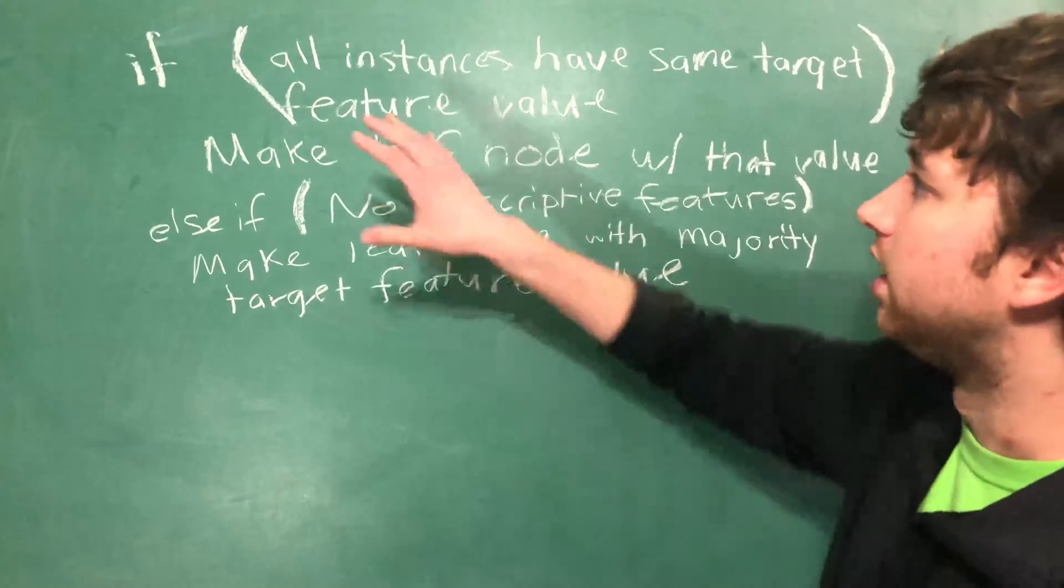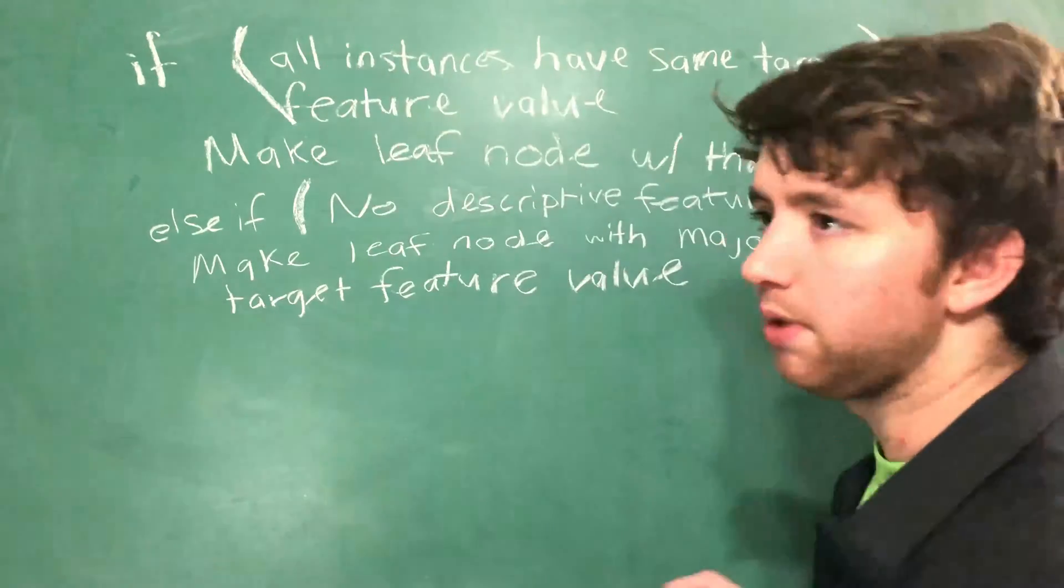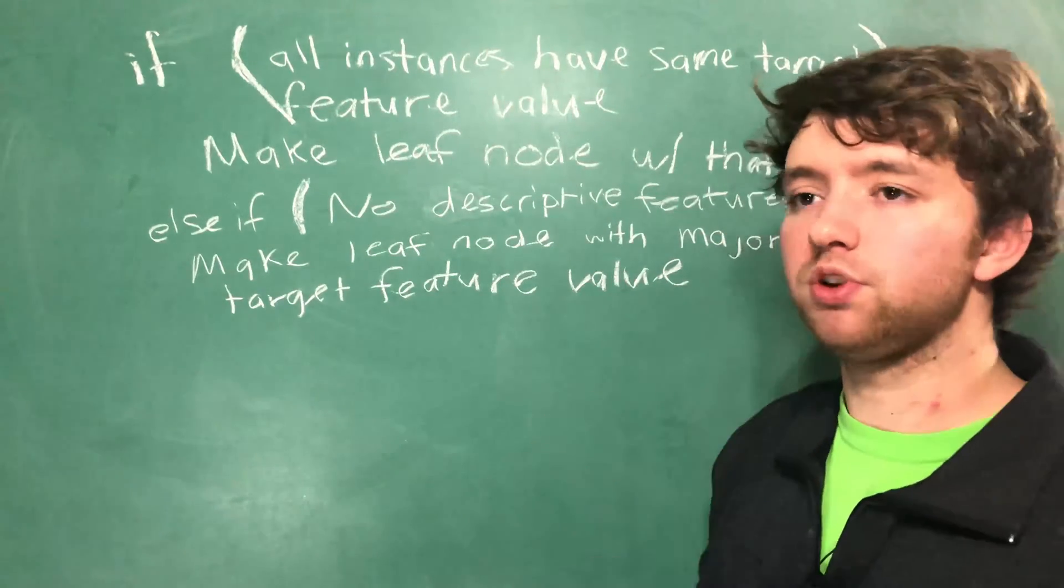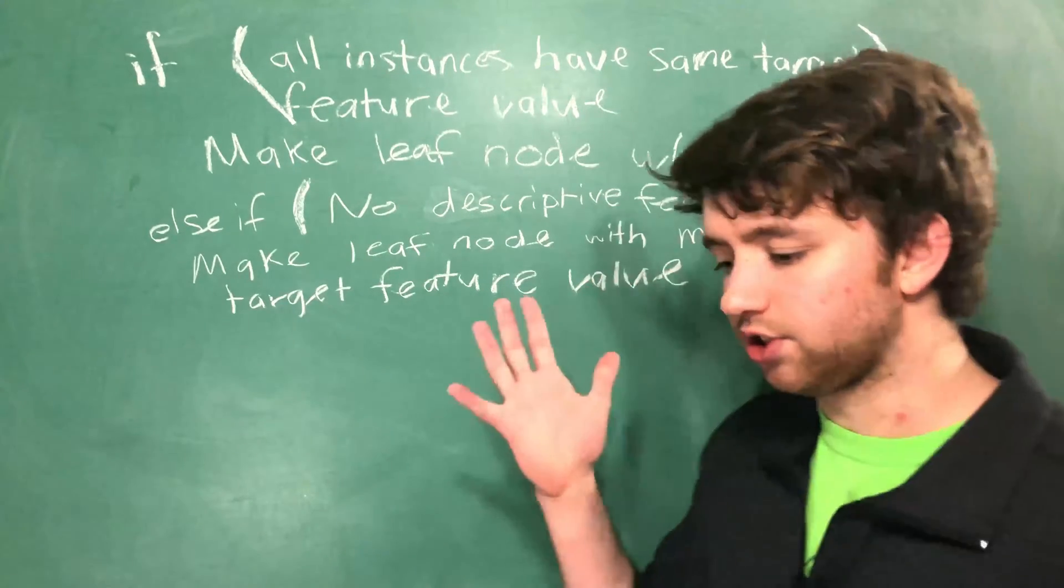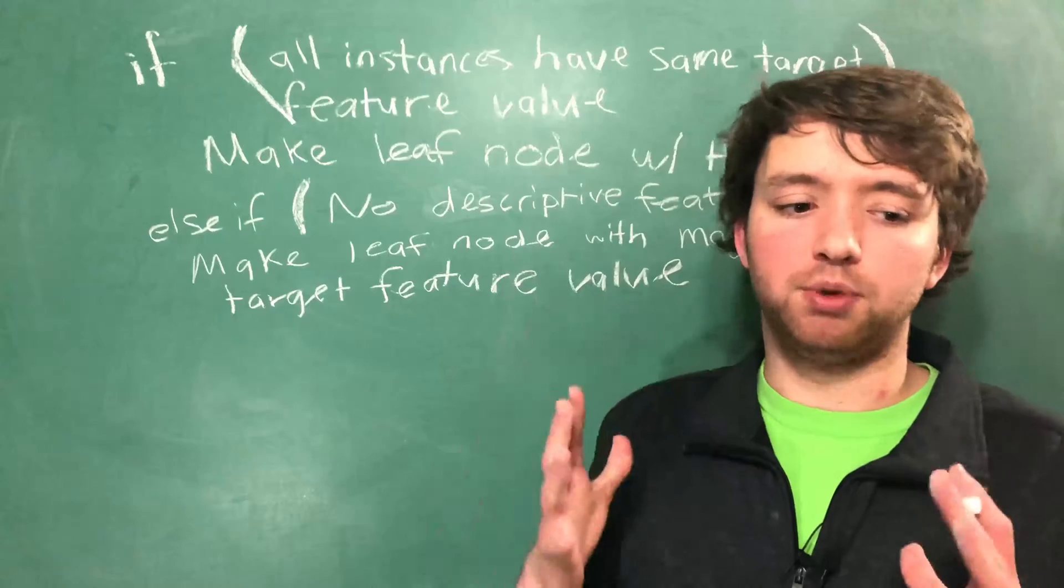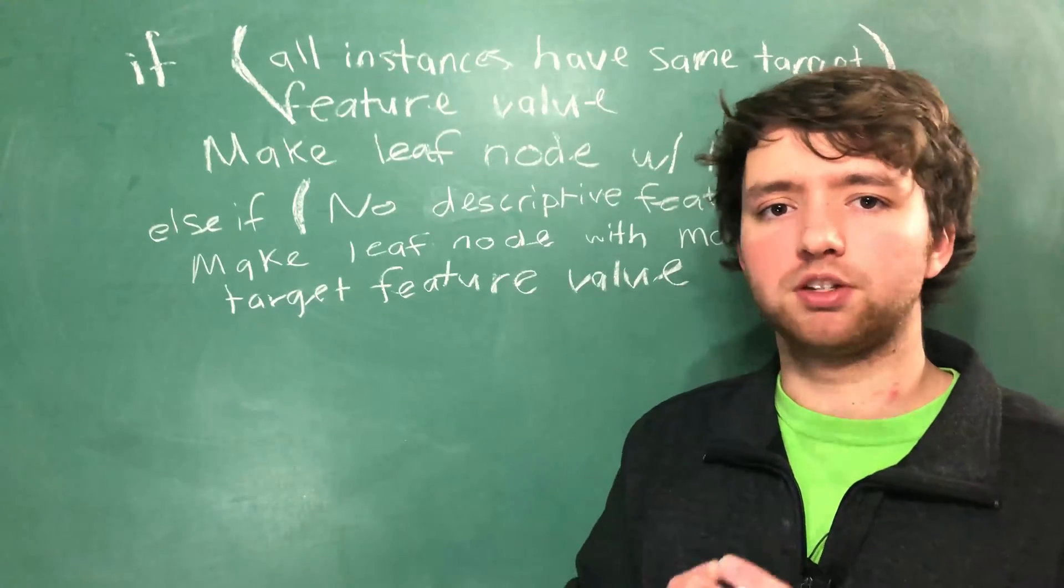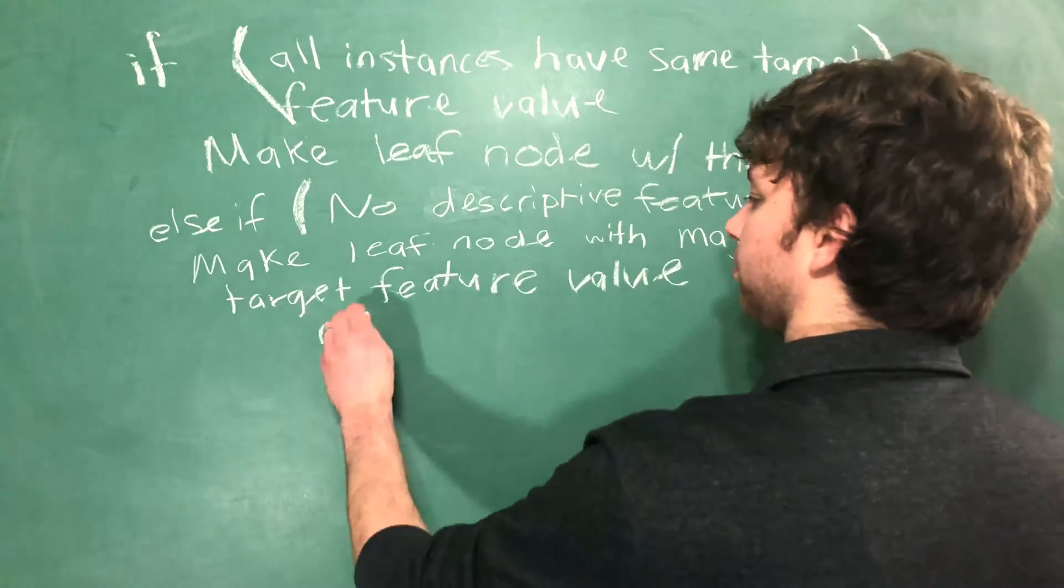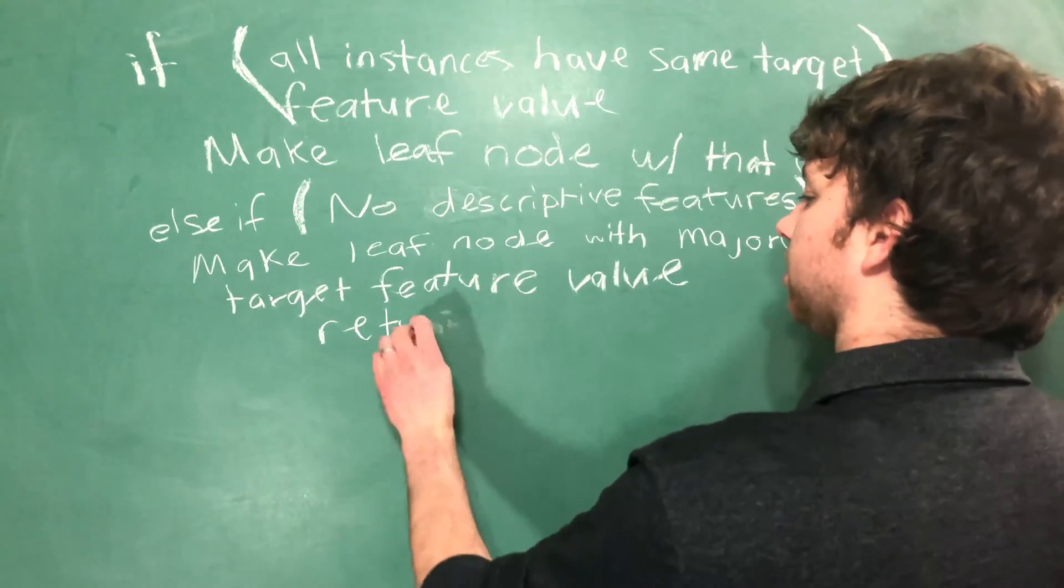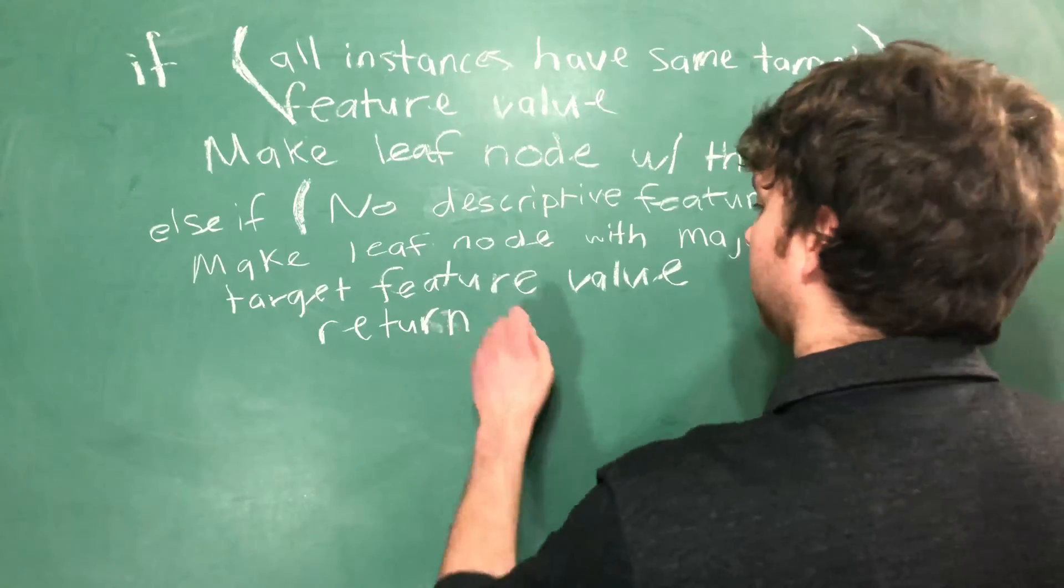So when we're making a tree this case up here can actually make a shorter tree and that's one of the goals of the ID3 algorithm. Essentially when we get to the situation where everybody has the same target feature value it's going to return, which is another thing I need to put here. You need to return which is going to end that function call.